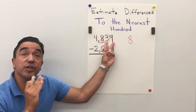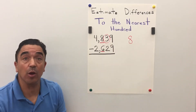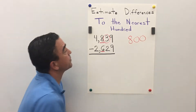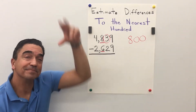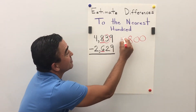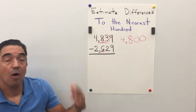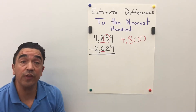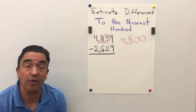The two digits after the eight are going to become zeros, and the four we're just going to drop. 4839 rounded to the nearest hundred is 4800.